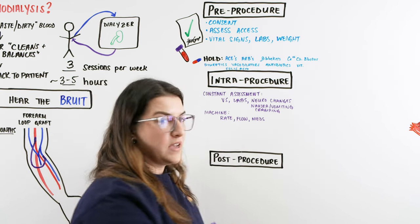Muscle cramps occur because fluids and electrolytes are changing rapidly. If a patient has cramps, note it, check labs, change the rate if needed, address electrolyte imbalances medically, give medications per the care plan, and provide a gentle stretch. The key is responding to what the labs and symptoms indicate.